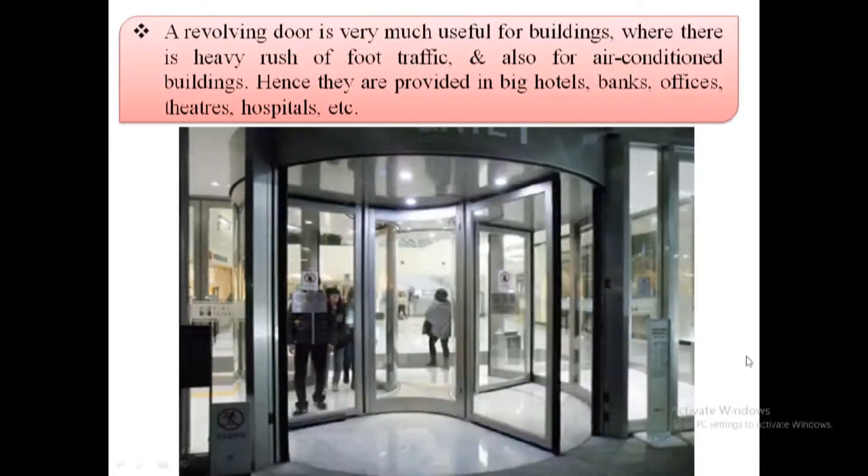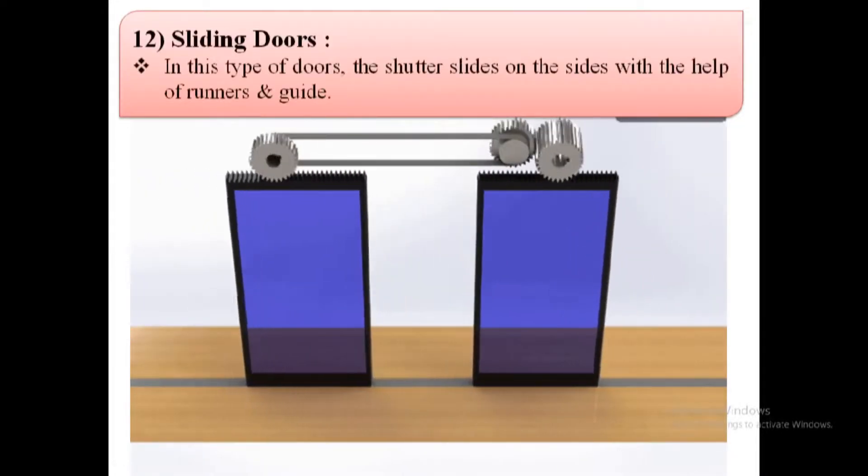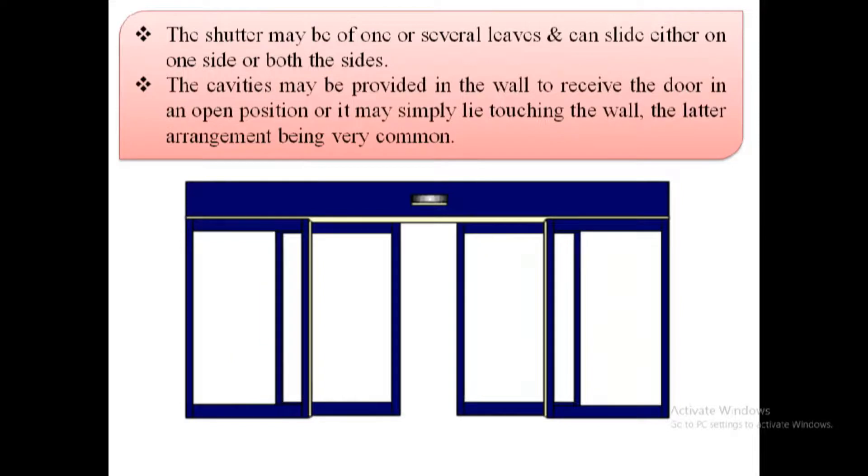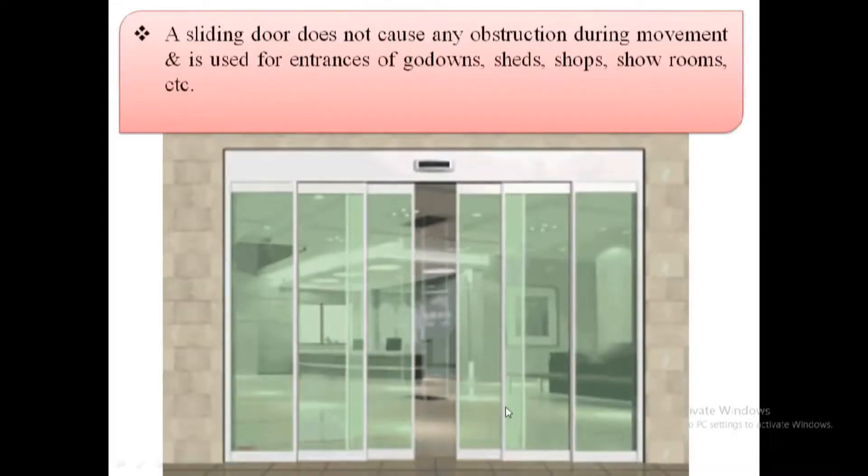Sliding doors. In this type of door, the shutter slides on the sides with the help of runners and guide rails. The door may have one sliding shutter, two shutters, or even three shutters, depending upon the size of the opening and the space available on sides for sliding.